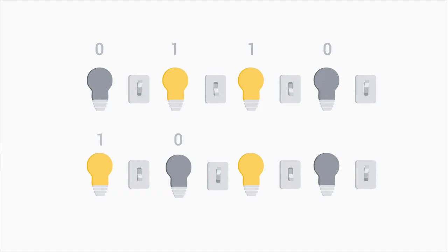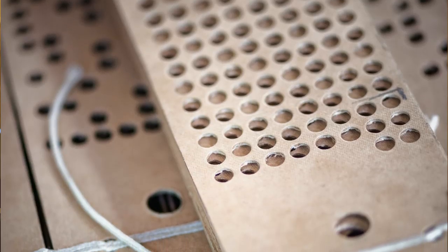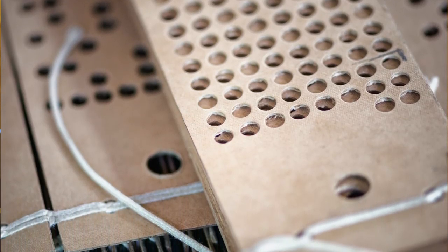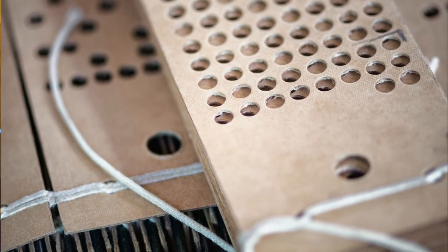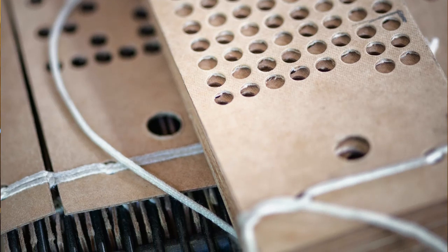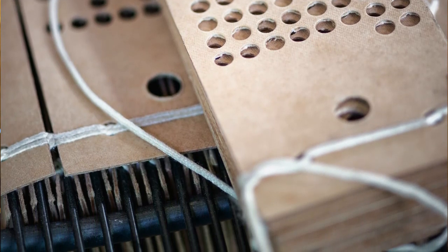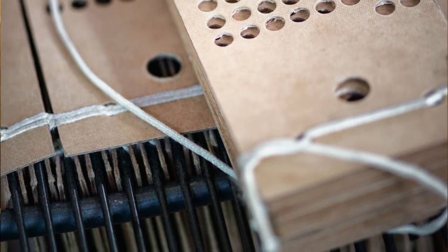That represents eight bits with a state of zero or one. Let's backtrack to the punch cards that were used in Jacquard's loom. Remember that the loom used cards with holes in them. When the loom would reach a hole, it would hook the thread underneath, meaning that the loom was on.